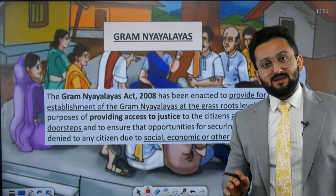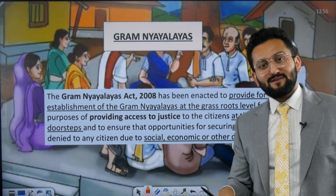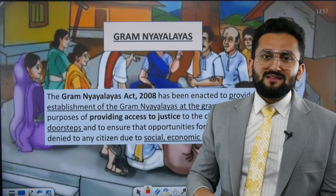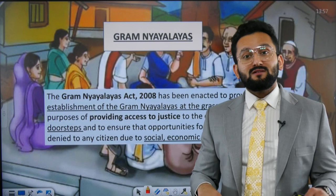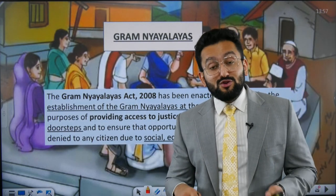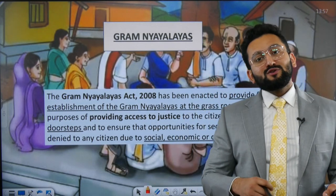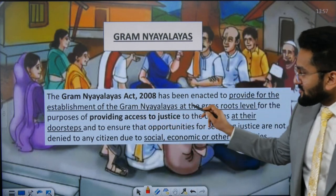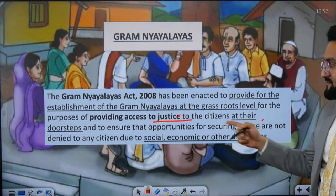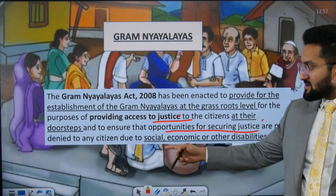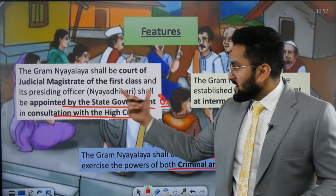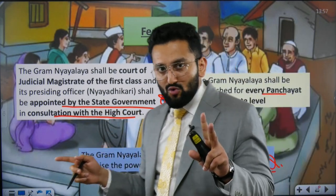Now, Gram Nyayalayas. As the name suggests, these are nyayalayas (courts) at the gram (village) level. In some districts there are more than 700 villages, and it is very expensive and time-consuming for a person from a village to travel to the district or subdivision for a case hearing. Many people suffer exploitation because they can't devote that much time and resources. That is why the concept of Gram Nyayalayas was invented — justice at your doorstep. The Gram Nyayalayas Act, 2008 was enacted to establish Gram Nyayalayas as statutory bodies at the grassroot level for providing access to justice at citizens' doorsteps.